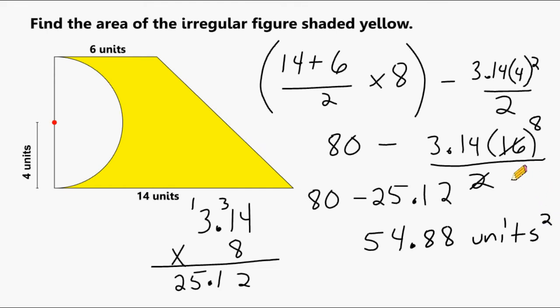Now, if we were to round to the nearest tenth, that would be 54.9 square units. But we can leave our answer like this. And remember, 3.14 is an approximation. So whenever multiplying anything by an approximation, your answer itself is an approximation. So we have to say that the area of the portion shaded yellow is approximately equal to 54.88 square units.